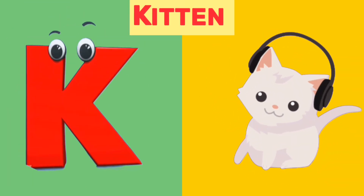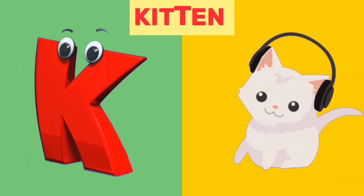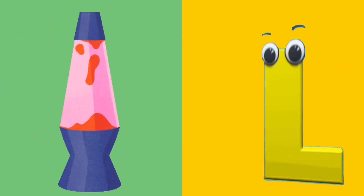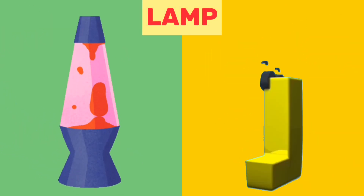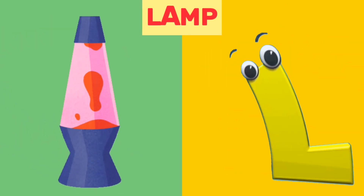K is for kitten. K, k, kitten. L is for lamp. L, l, lamp.